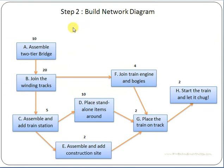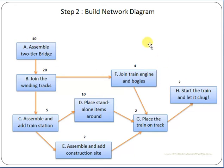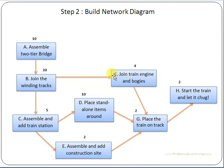Based on those activities, you build a network diagram. Here you can see activities A, B, C, D, and each activity has a time duration — for example, activity A takes 10 minutes, activity B takes 20 minutes, activity C takes 5 minutes. From a certain point, activity F can start and activity C can also start, so two paths can be created from there.